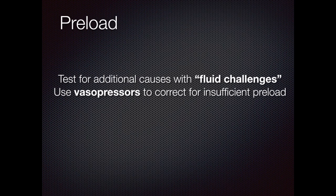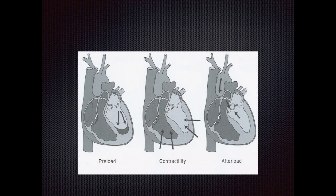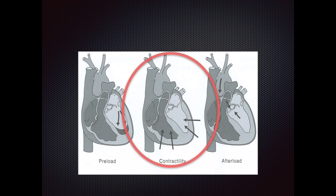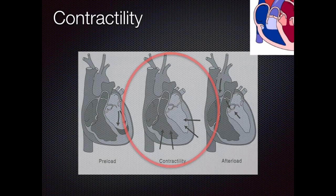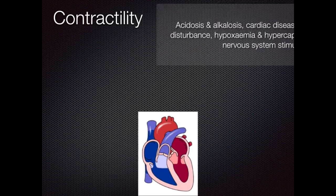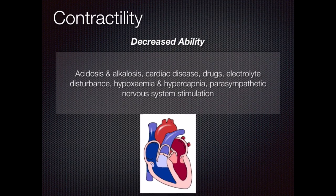Vasopressors work by squeezing the peripheral circulation to return blood back to the heart. The next component, contractility, is affected by many factors. It is decreased by acidosis, alkalosis, cardiac disease like ischemic heart disease and cardiomyopathy, drugs like beta blockers and calcium channel antagonists, electrolyte disturbances like hyperkalemia and hypocalcemia, hypoxemia, hypercapnia, and parasympathetic nervous system stimulation.